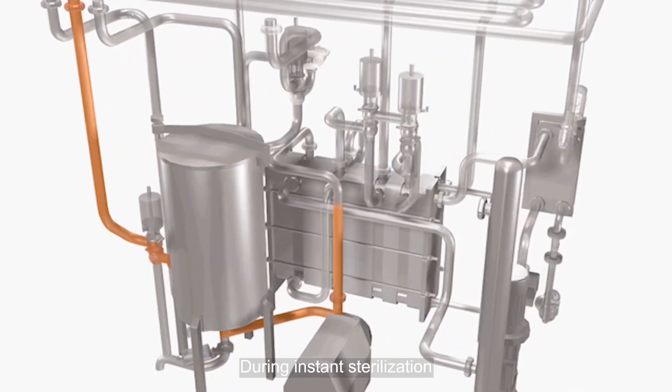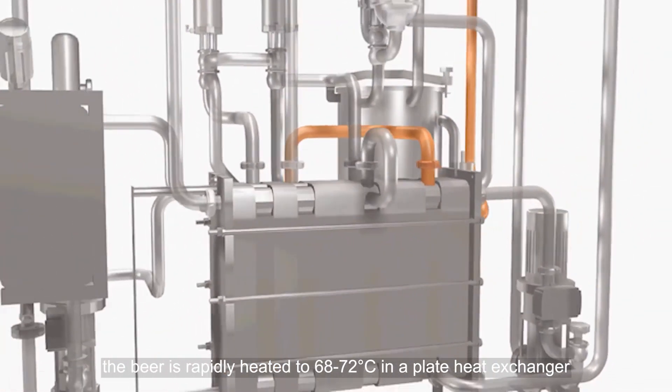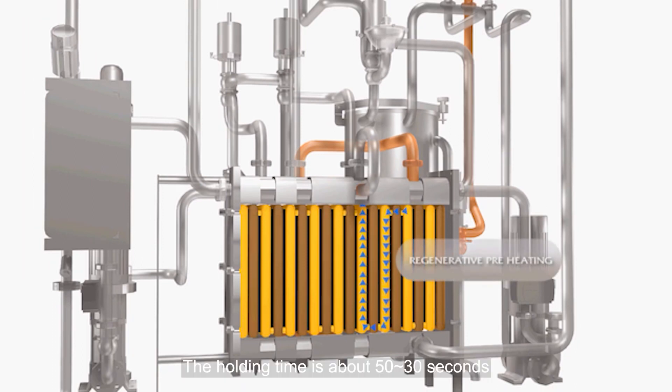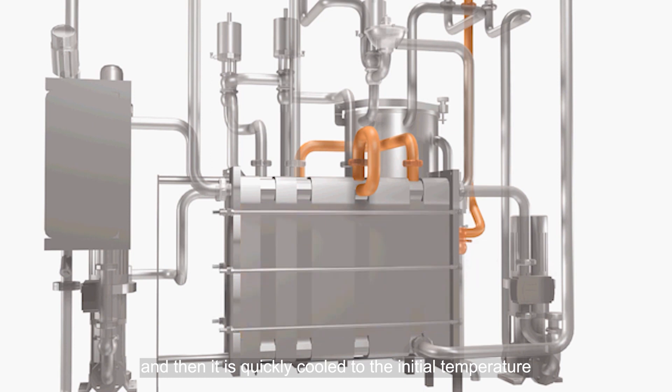During instant sterilization, the beer is rapidly heated to 68 to 72 degrees Celsius in a plate heat exchanger. The holding time is about 30 to 50 seconds, and then it is quickly cooled to the initial temperature.